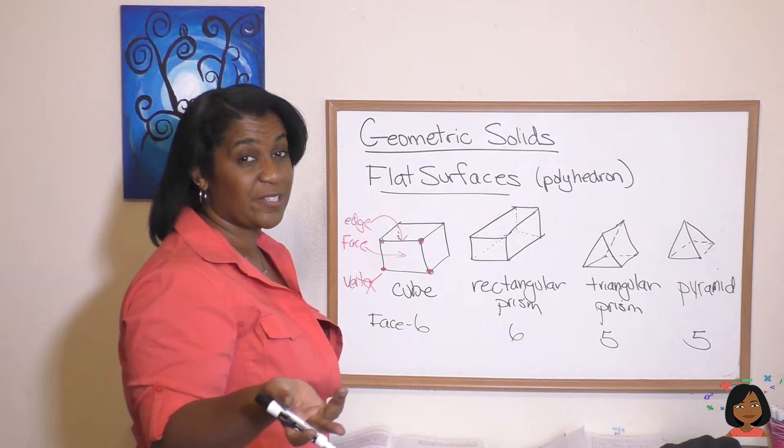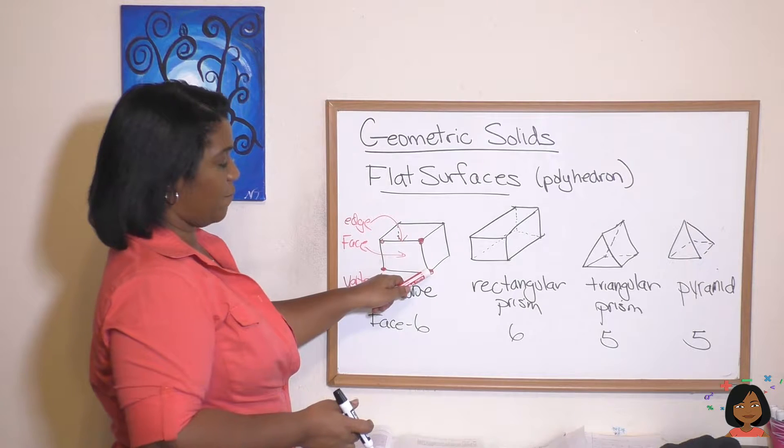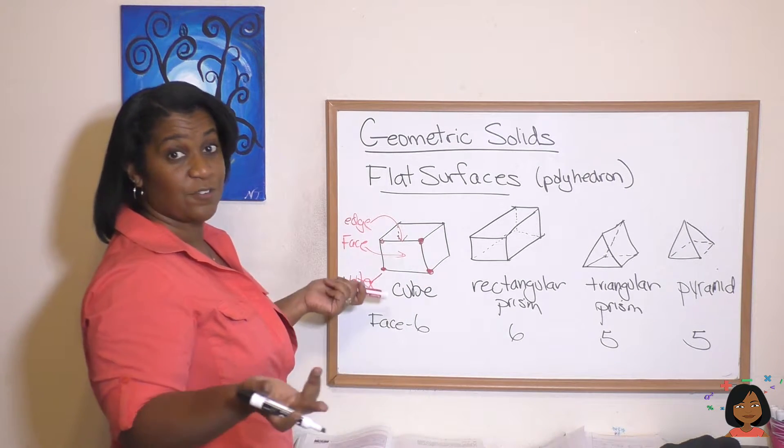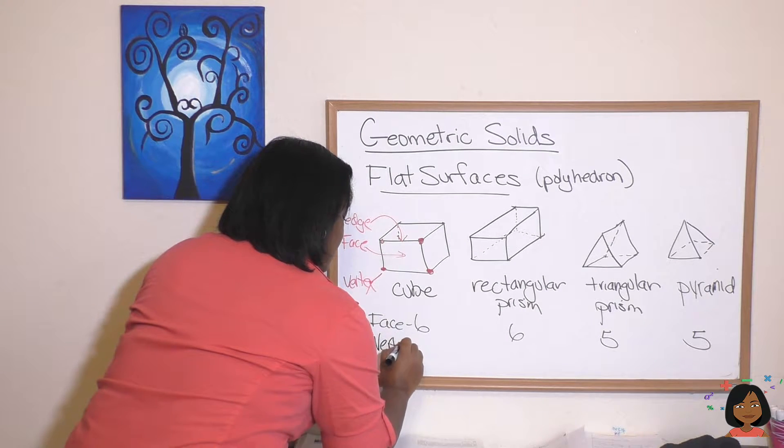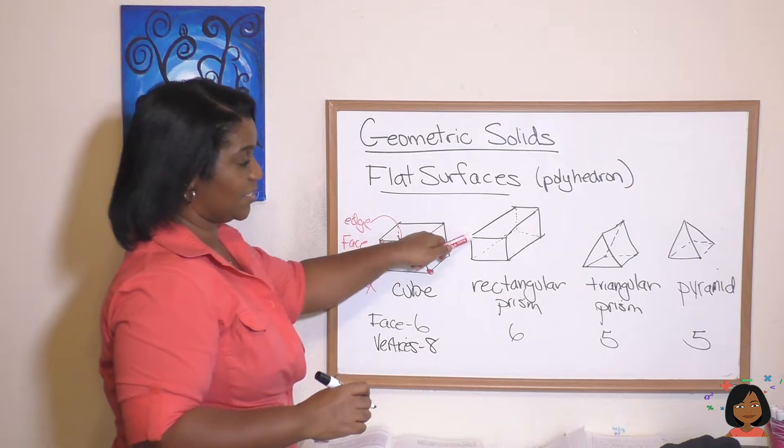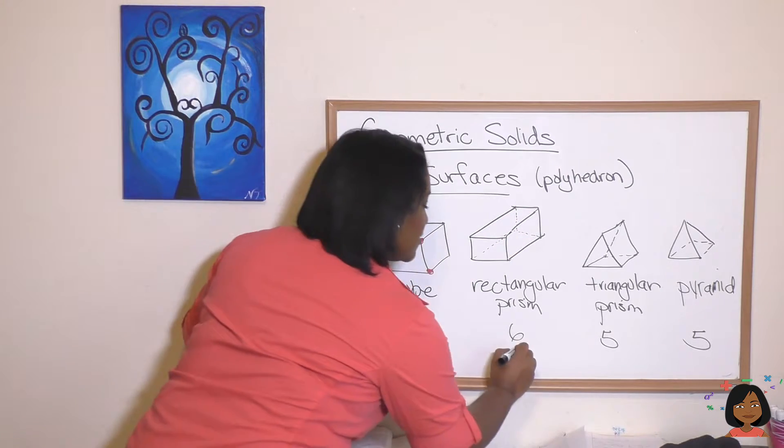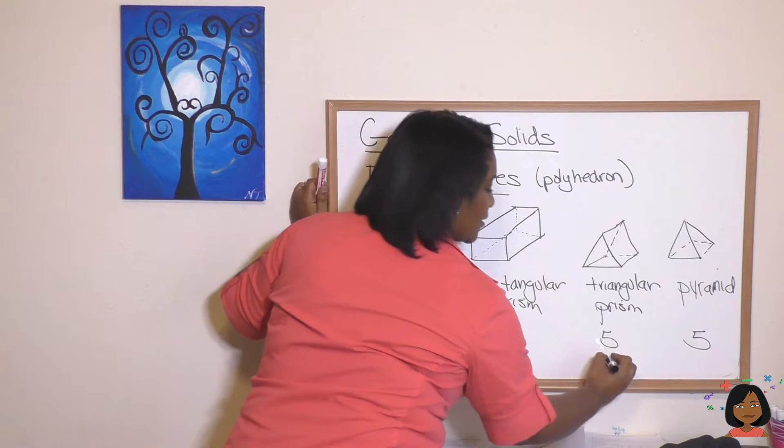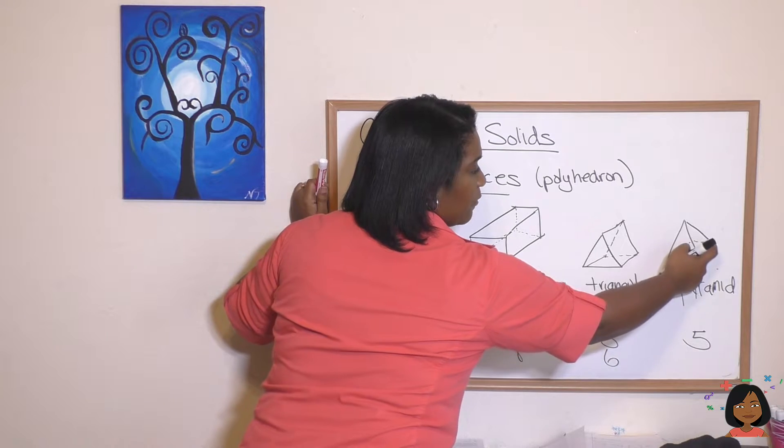What about vertices? Start with the cube. We've got one, two, three, four, five, six, seven, eight. Eight vertices. And rectangular prism you can see it's going to be the same - one, two, three, four, five, six, seven, eight. Triangular prism: one, two, three, four, five, six. And a pyramid we've got one, two, three, four, and one up on top.